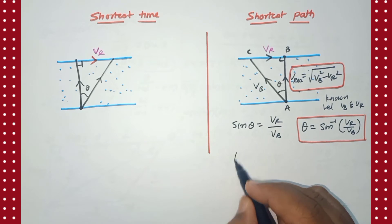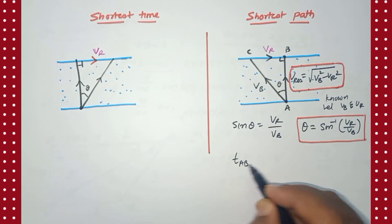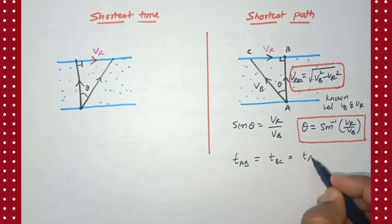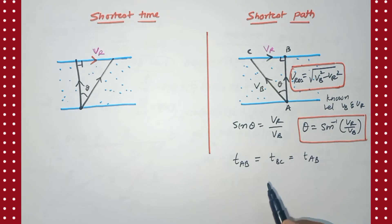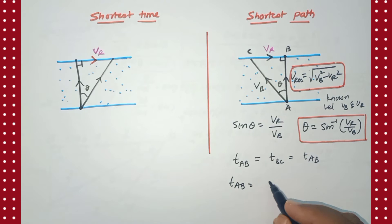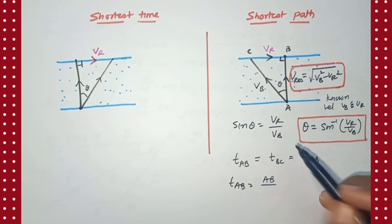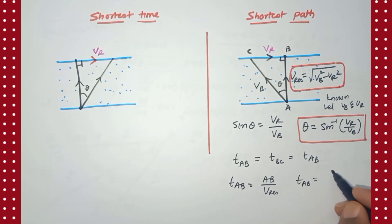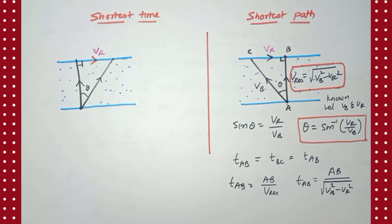After finding the direction, we find how much time it will take to reach the opposite end. Time across AB equals distance by velocity. Time = AB / v_resultant = AB / √(vb² − vr²). So we have obtained the time along the shortest possible path. This completes the shortest path case.